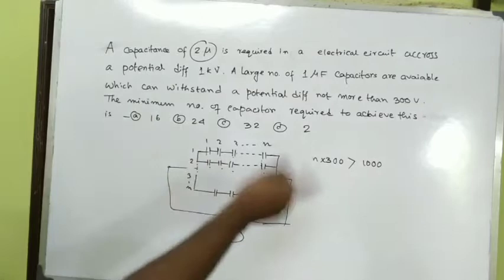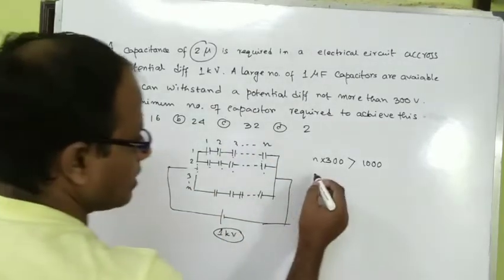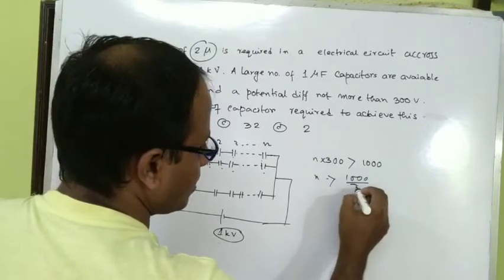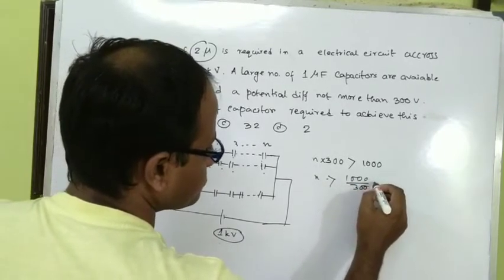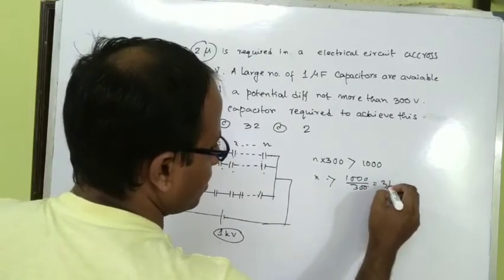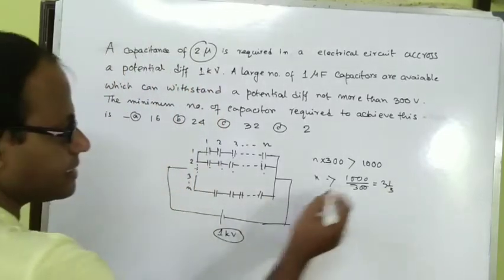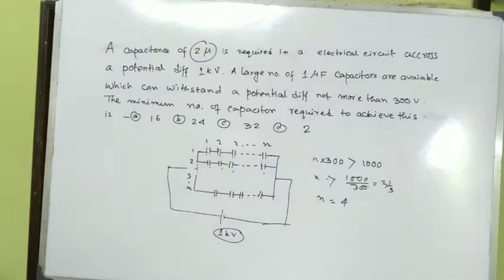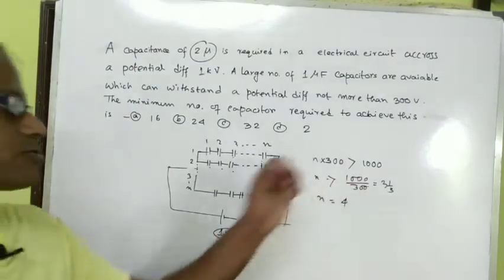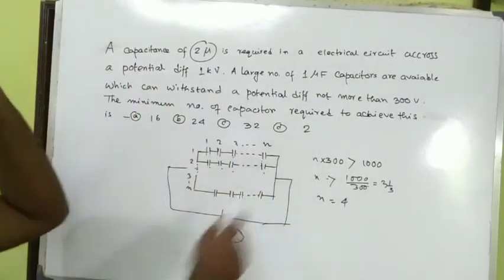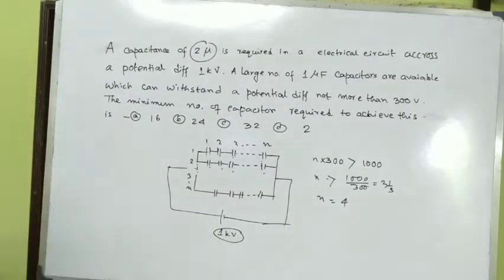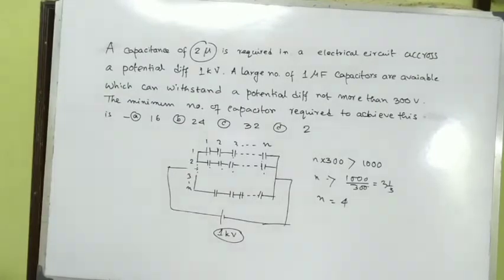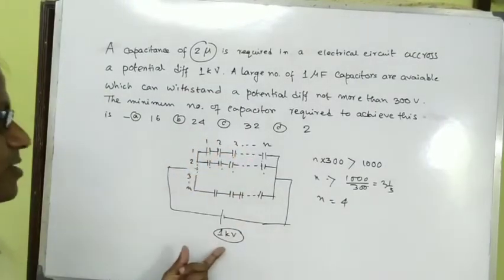Calculating n: 1000 divided by 300 equals approximately 3.33. So n must be greater than 3.33. We need at least n equals 4 capacitors in series.